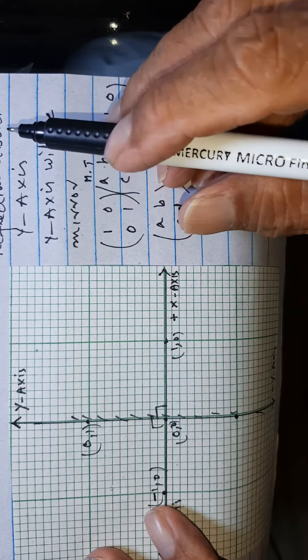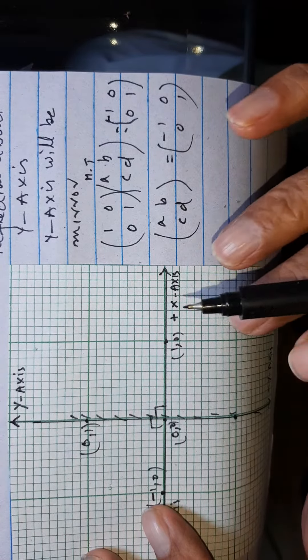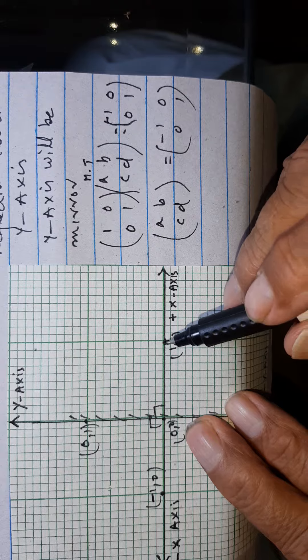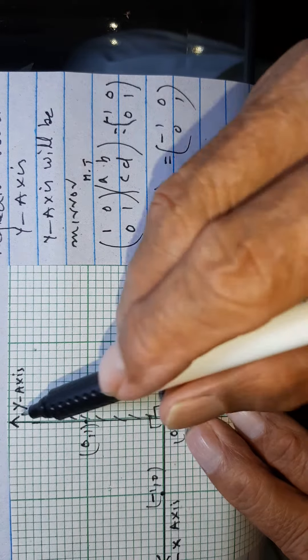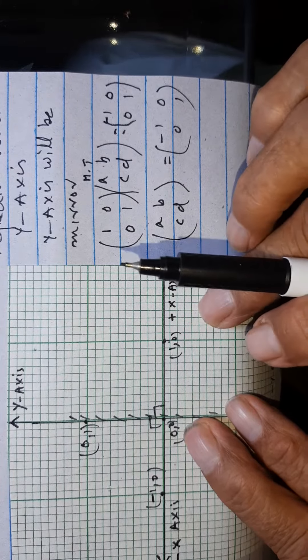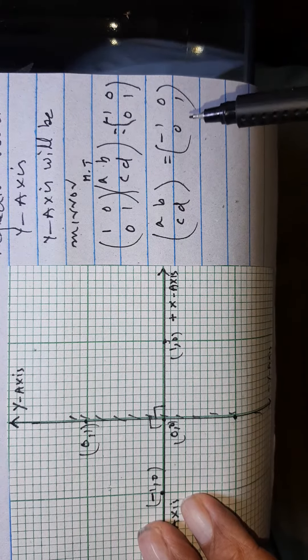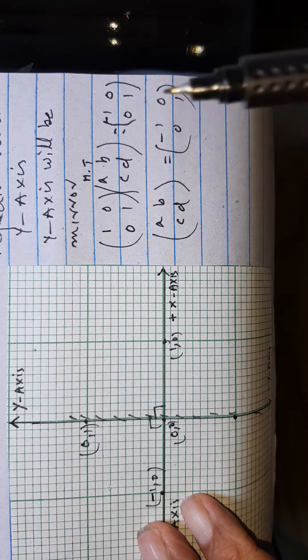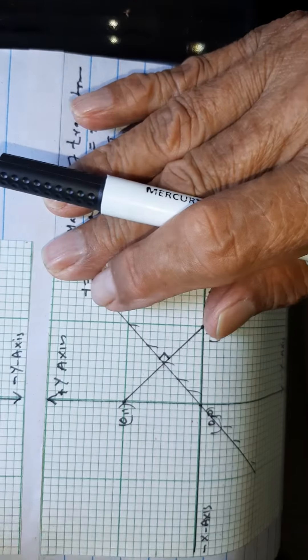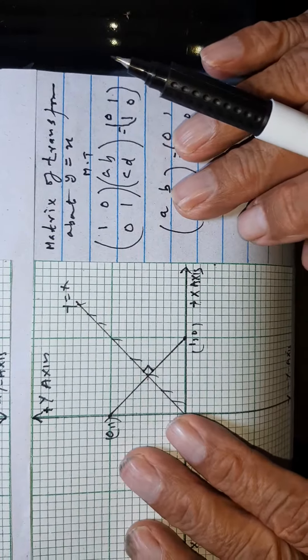This y-axis, the y-axis is our mirror line. This point 1 0 comes to minus 1 0, and 0 1 remains the same. When the point lies on the mirror line, it will not change. This will be the matrix of transformation: minus 1 0, 0 1 is the reflection about the y-axis.